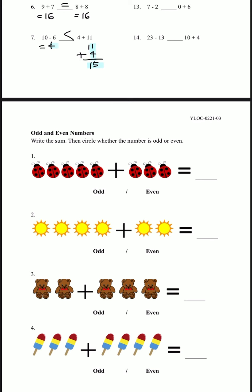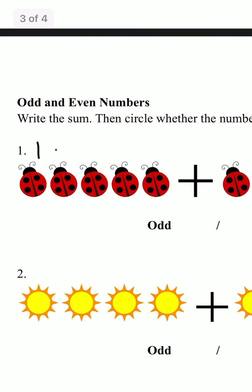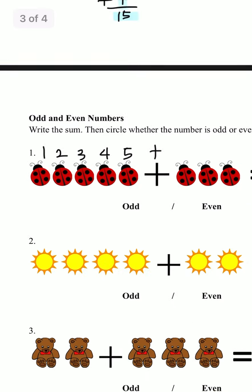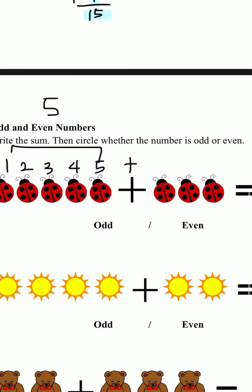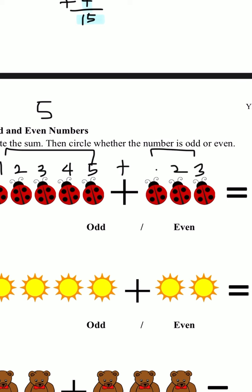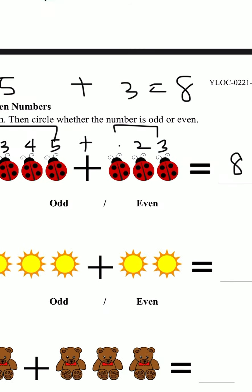The next page, we have odd and even numbers. Circle whether the number is odd or even. For number 1, we're going to first count how many there are. Here's 1, 2, 3, 4, 5 — so here's 5. And then here we have 1, 2, 3. So 5 plus 3 equals 8. So that would be equal to 8. 8 is an even number, so we circle even. And we do the same thing for the rest.